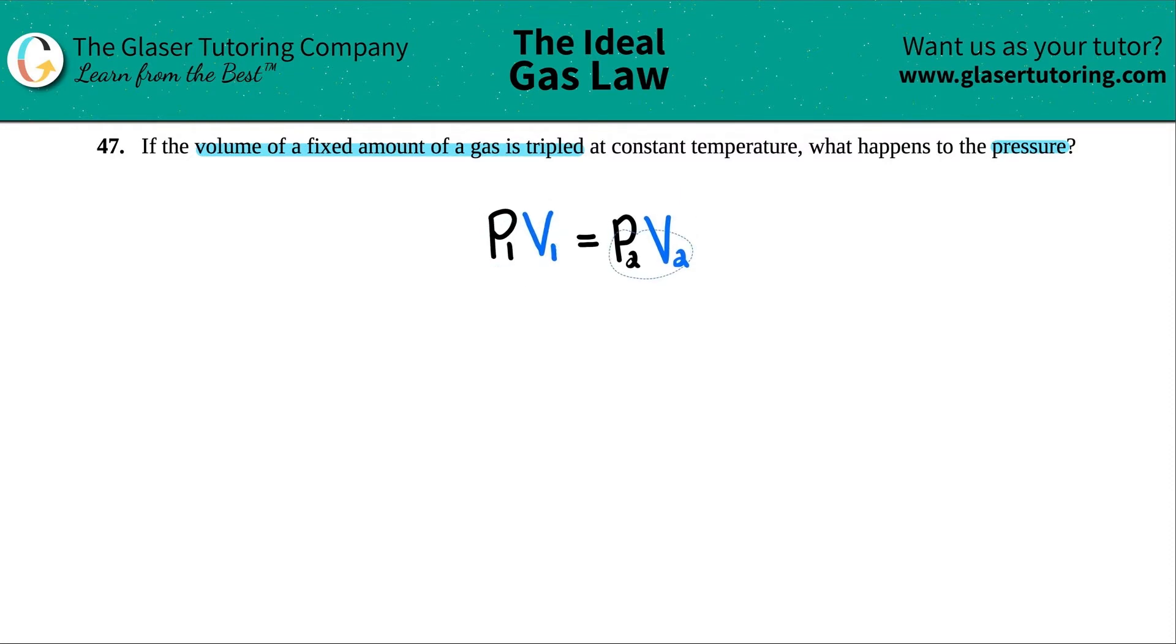Now we are left with basically Boyle's equation—brought it back to just pressure and volume. P₁V₁ equals P₂V₂. Now we just have to figure out what's going on. Is it a direct relationship between pressure and volume or an indirect relationship?